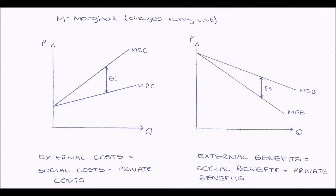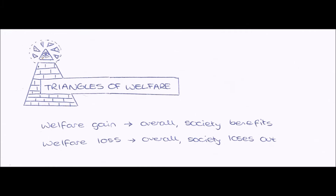External benefits is equal to the difference between the two lines. Next we move on to triangles of welfare. You need to know the difference between welfare gain and welfare loss: welfare gain is when overall society gains — society benefits, it's good. Welfare loss is when overall society loses out, and this is bad. When welfare loss occurs, welfare is not being maximized, so therefore market failure occurs.